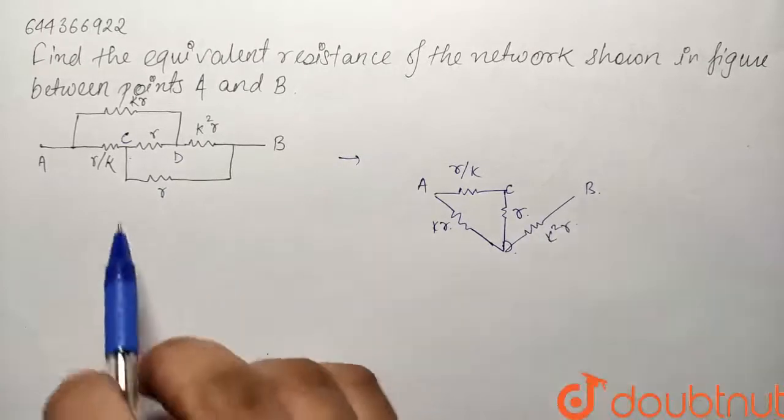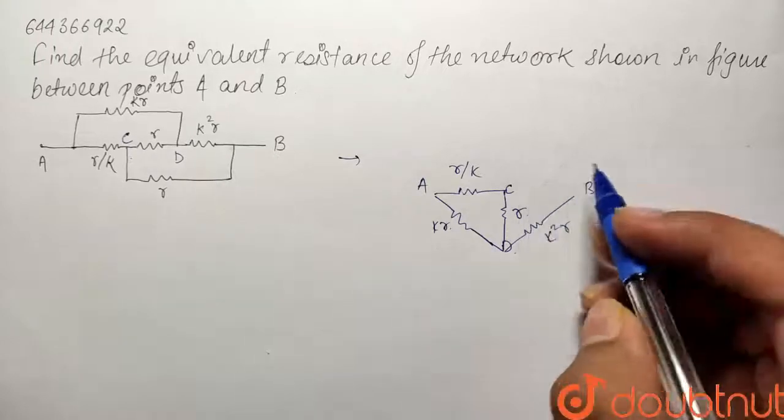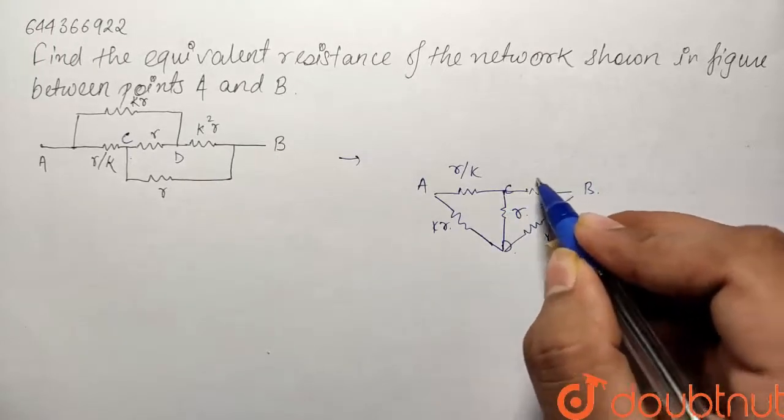And our final resistor is between C and B and its value is R again. So this will become R.